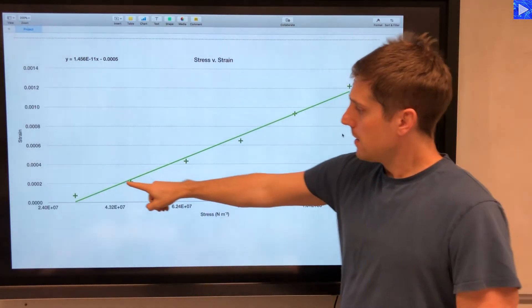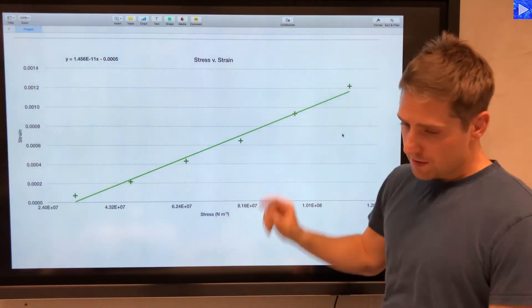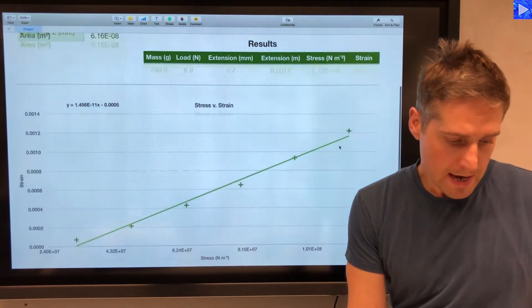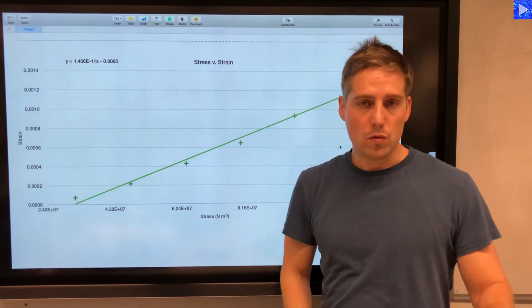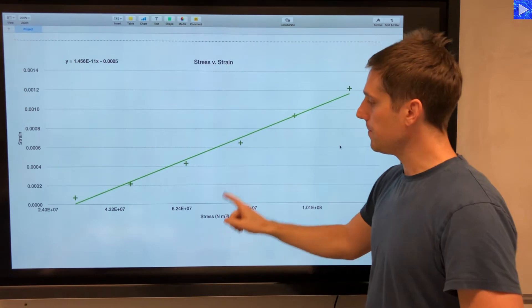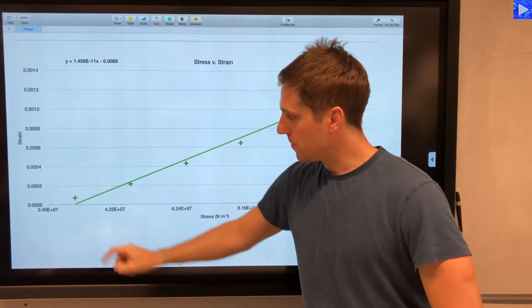So these are my data plots. They've come up from that table, these two columns here. And I set my graph to automatically produce a trend line, line of best fit. So that is the line of best fit there.